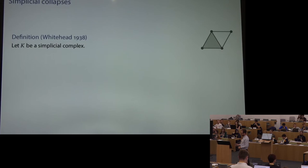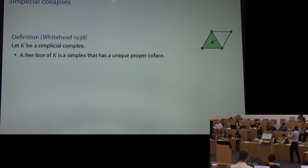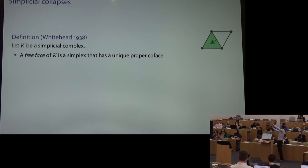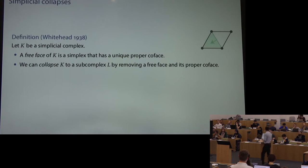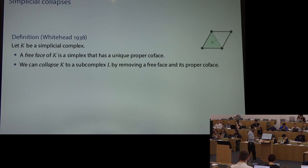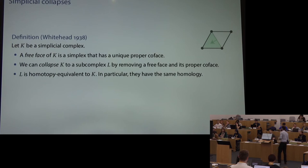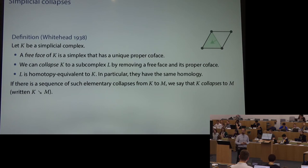Here's an example of a simplicial complex: some points, edges, a filled gray triangle on the left, an unfilled white one — topologically it has a single hole, like a circle with a flag. I want to collapse the filled triangle. Collapses come in pairs: a simplex of dimension k and a coface of dimension k+1 — here an edge and a triangle. The arrow goes from the lower to the higher dimensional one. You pull in the direction of the arrow; this continuous deformation removes both simplices. We remove a free face — a simplex with only a single higher-dimensional coface. This doesn't change the homotopy type or homology.